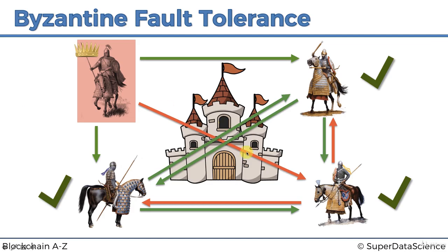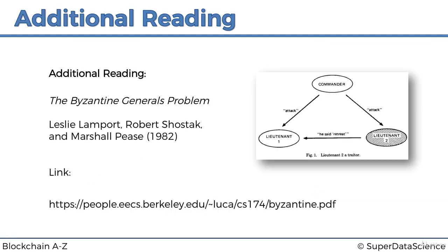Byzantine fault tolerance is a huge concept even though it looks very simple — almost like an airy-fairy story about generals in the Byzantine Empire. It's actually a massive concept for decentralized systems and systems with lots of components, and blockchain is just one of them. For more detail, there's the original paper 'The Byzantine Generals Problem' from 1982 by Lamport, Shostak, and Pease — an interesting paper with logical mathematical proofs.